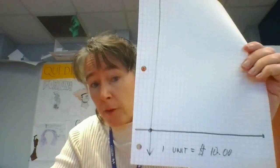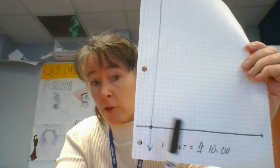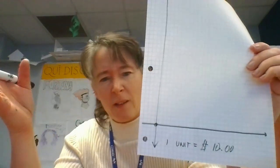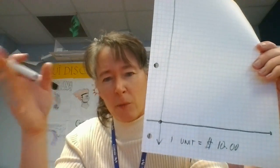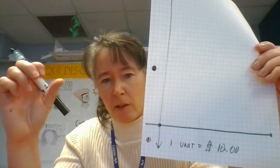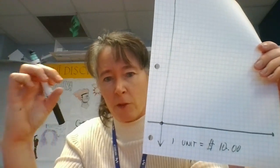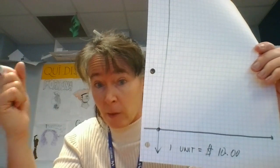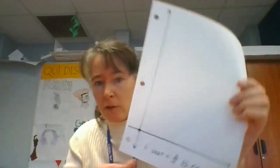When we graph our function, we're going to treat one square as ten dollars. Actually, we might want to change that a little bit depending on how much money you use. Maybe it should be more like one square equals five dollars. We'll see.